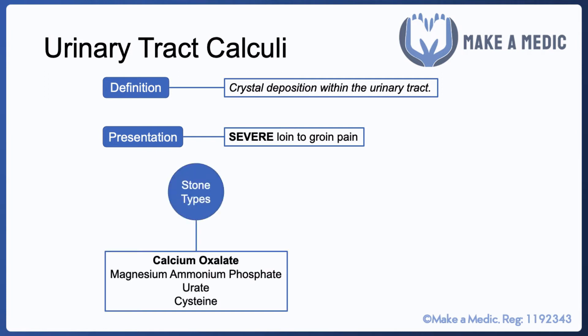There are a few different types of stone to be aware of. The most common is calcium oxalate, but there are a few others as well, such as magnesium ammonium phosphate — also known as struvite — urate, and cysteine.